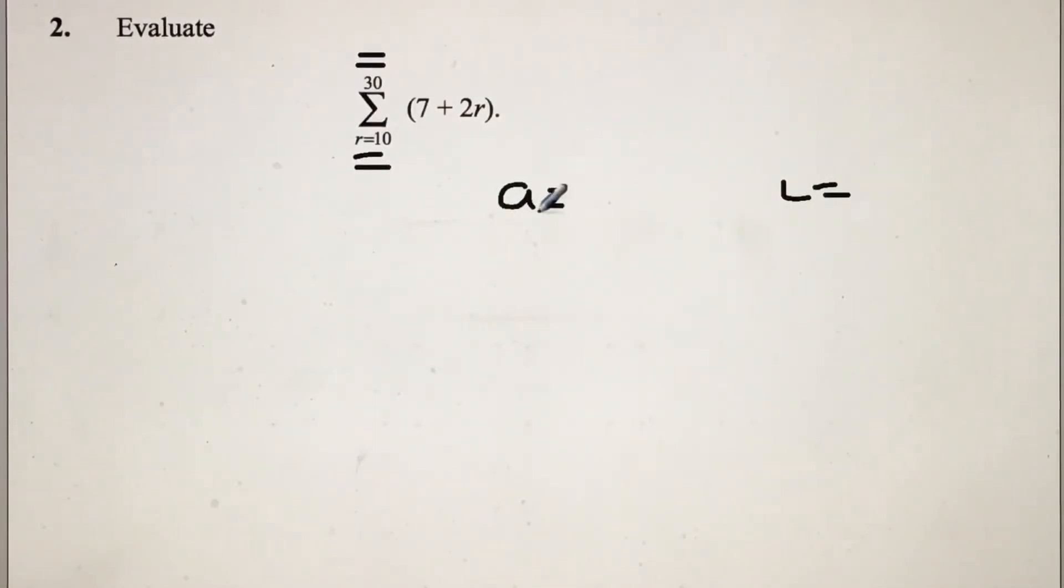To find out what A is, all we're going to do is substitute 10 into the equation. 10 times 2 is 20, plus 7, which gives us 27. So A is 27.